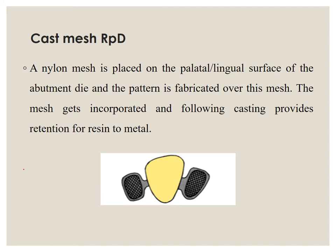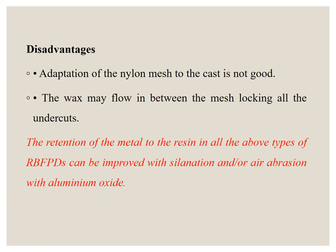Coming to the mesh type — cast mesh. A nylon mesh is placed on the palatal or lingual surface of the abutment die, and the pattern is fabricated over the mesh. The mesh gets incorporated and, following casting, provides retention for resin to metal. Disadvantage: adaptation of the nylon mesh to the cast is not really good, and wax may flow between the mesh, locking all the undercuts.